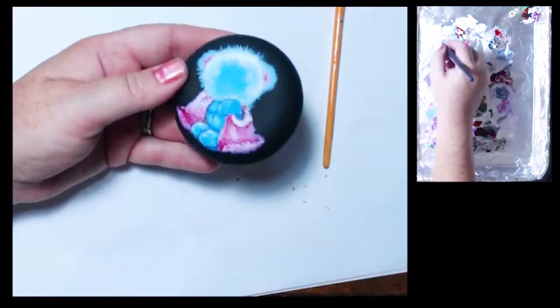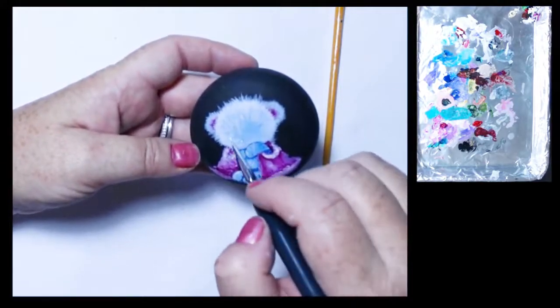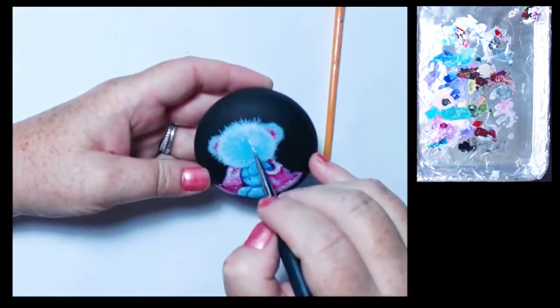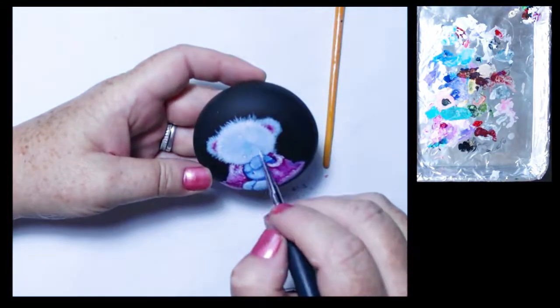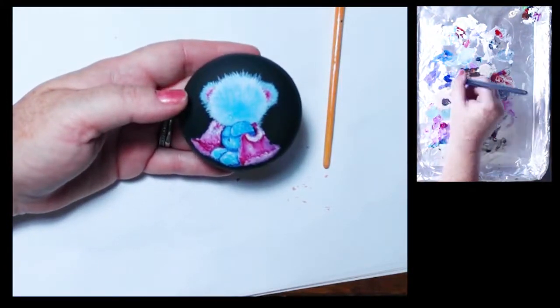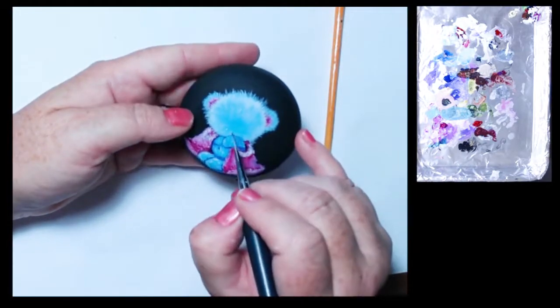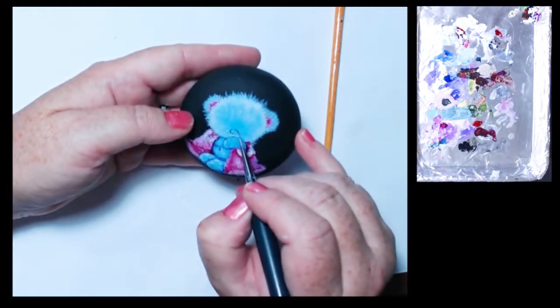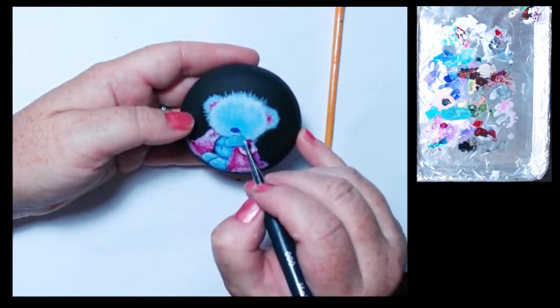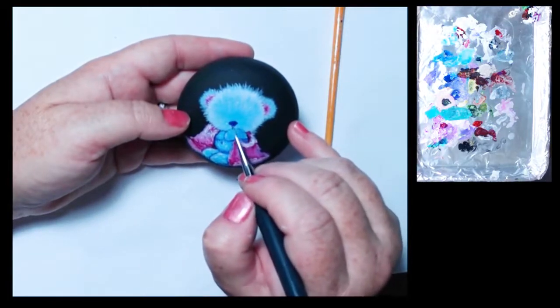Anyway so here I am putting in the fur texture to the head of the teddy bear and so I'm doing this in lines. It's subtle though, there's not a lot of contrast between the background color and the fur.